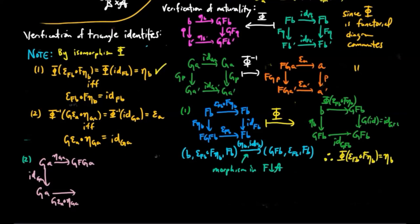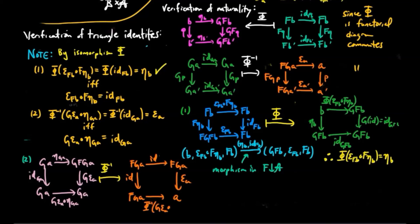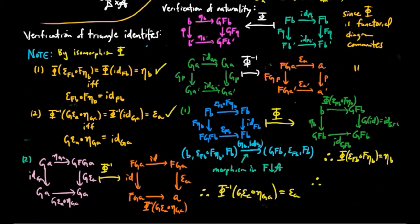Case 2 is entirely similar, so we will skip it, but you may pause the video if you would like the details. Therefore, the triangle identities hold and thus F is left adjoint to G, which finishes the proof.